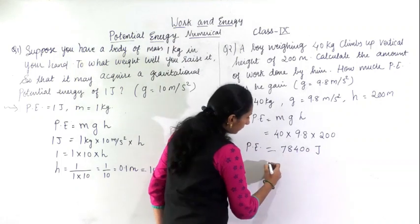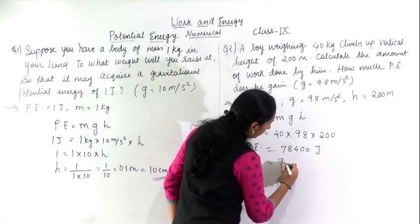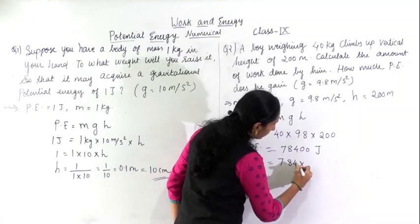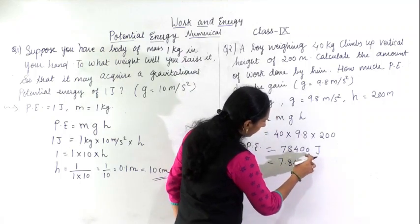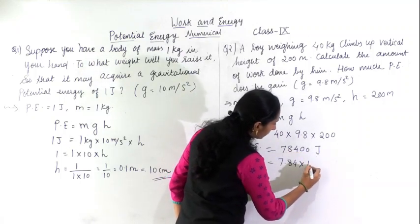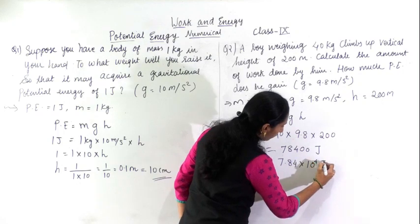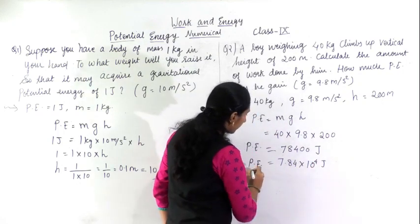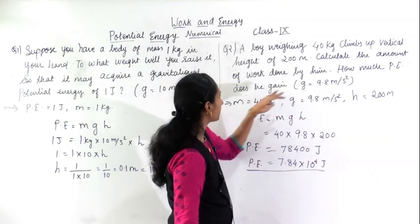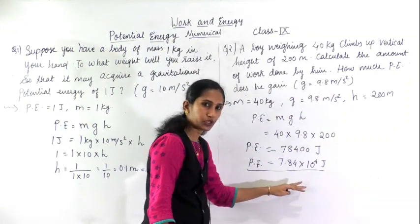Or you can also, if you want to make it short, you can make it as 7.84 into 10 raised to how much? It will become 1, 2, 3, 4 - four decimal points you have shifted. So 10 raised to 4 joules. This way also you can write. You have got the potential energy - how much potential he gained? He gained this much potential energy.